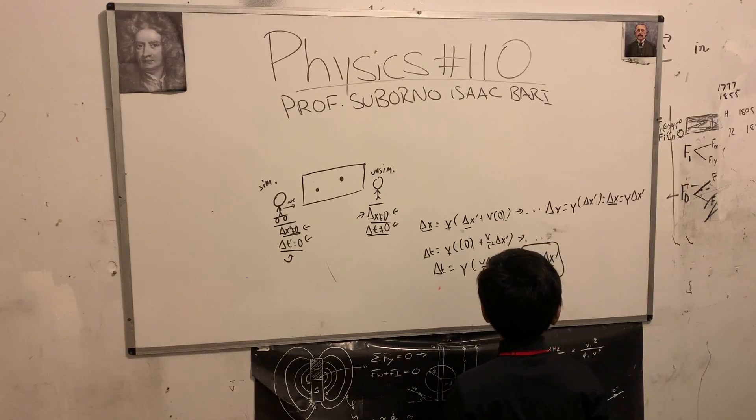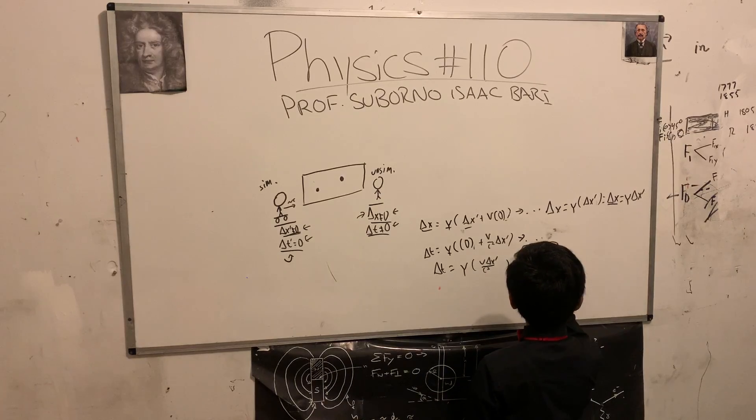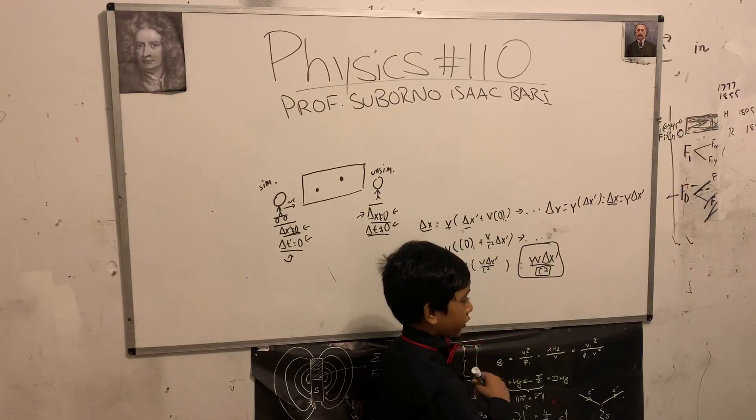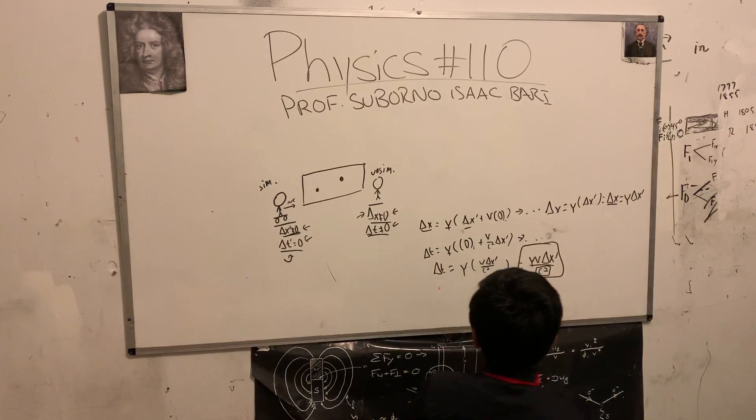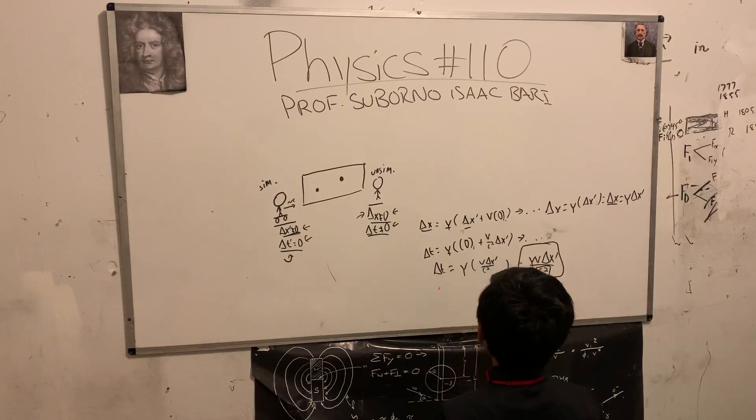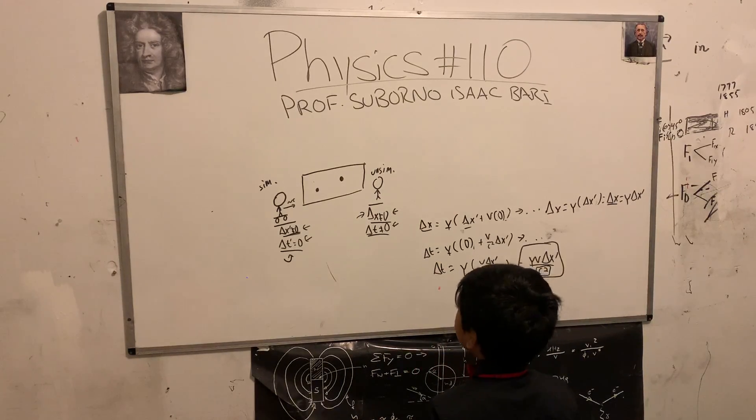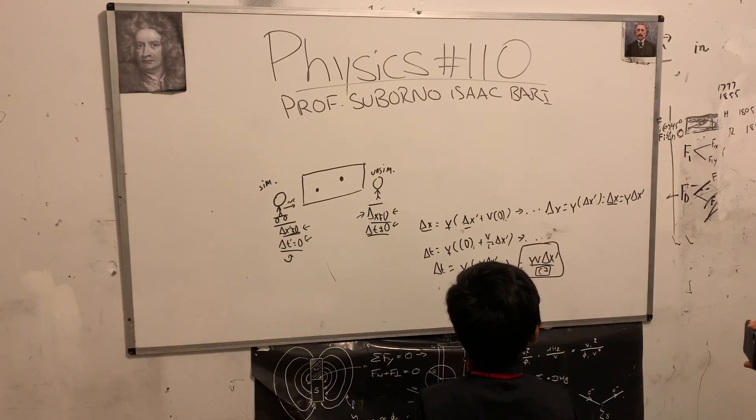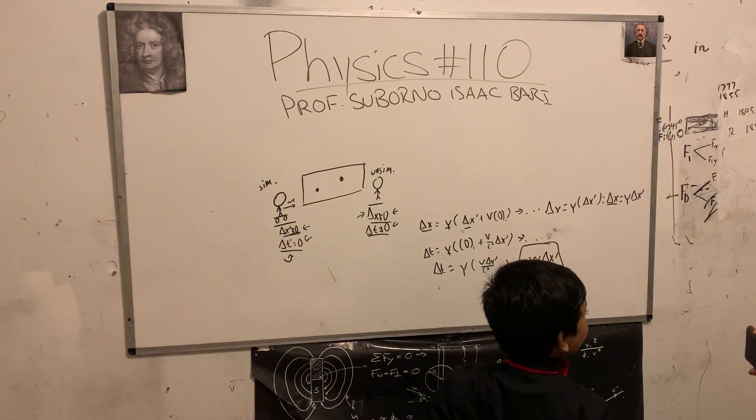Now that gives us gamma v delta x prime over c squared, which is in no way going to be equal to zero, although it's probably going to be a little bit close to it considering that c squared on the bottom.